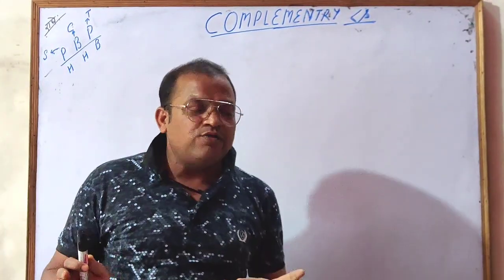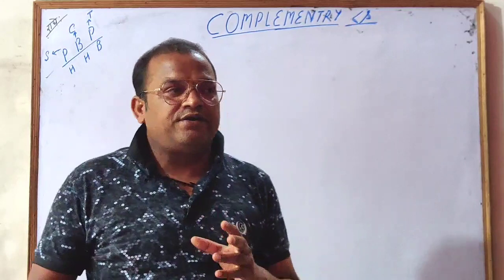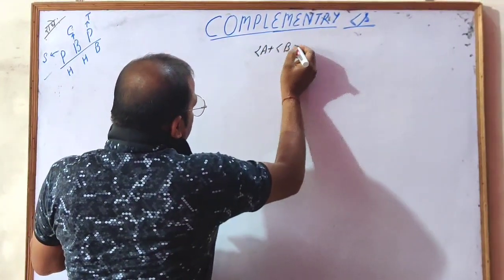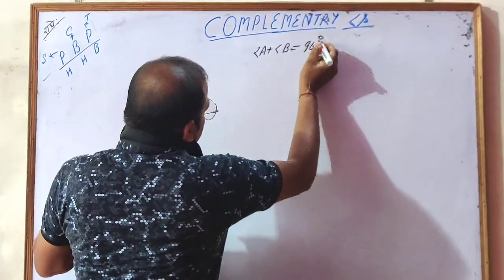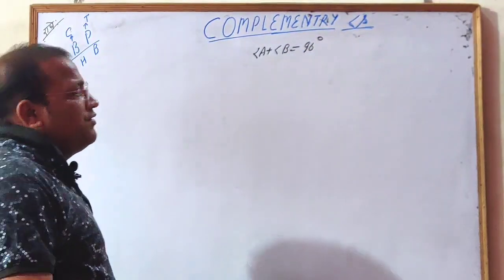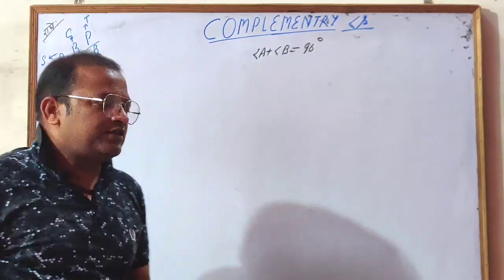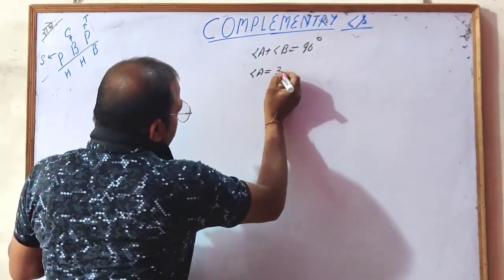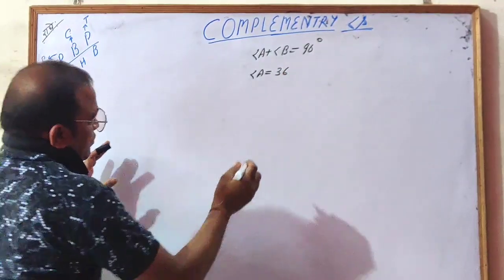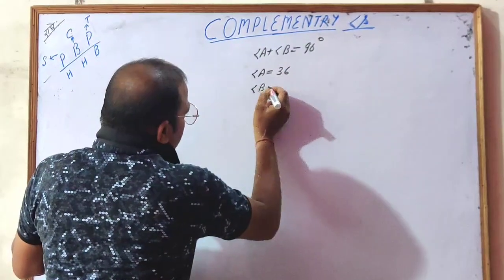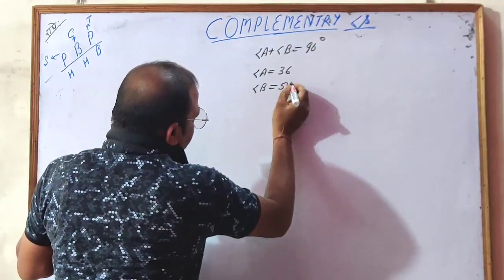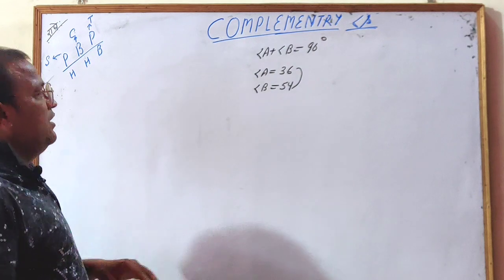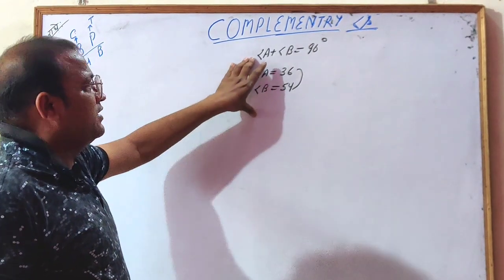Complementary angles are angles whose sum is 90 degrees. Two angles are said to be complementary if their sum is 90 degrees, and these two angles are said to be the complement of each other. Suppose angle A has a value of 36, then its complement, angle B, would be 54. We can say that the sum of these two angles is 90 degrees — these are called complementary angles.